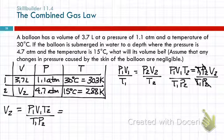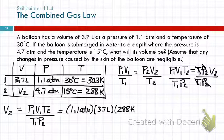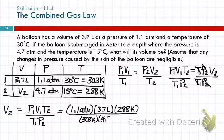So, now I go find these numbers. P1, 1.1 atmospheres. Volume 1, 3.7 liters. Temperature 2, 288 Kelvin. Down in the bottom, temperature 1, 303 Kelvin. And pressure 2, 4.7 atmospheres. The atmospheres cancel. The Kelvins cancel.